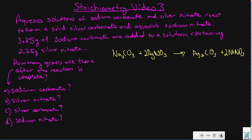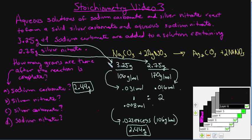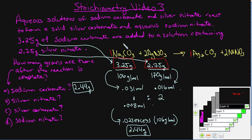Now let's put in our grams. The best approach is to write each mass directly under its reactant in the equation: 3.25 grams under sodium carbonate and 2.75 grams under silver nitrate. To figure out which is limiting, we have to convert to moles, because the balanced equation gives us the mole ratio — which is 1 to 2 between these two reactants.